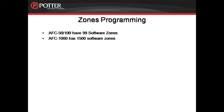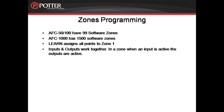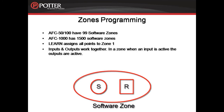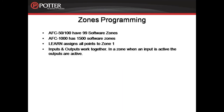These software zones can represent a group of devices located in a specific physical area, or they may represent a set of devices configured for a specific function. When the learn function is run via the fire alarm control panel keypad, all of the points found during the learn are assigned to zone 1. When points are assigned to a zone, they work together, which means that any inputs assigned to a zone will activate the outputs in that same zone. For example, if you want a smoke detector to trigger a relay, the smoke detector and the relay need to be assigned to the same software zone. Each point on the system can be assigned to all of the software zones, providing a lot of programming flexibility.